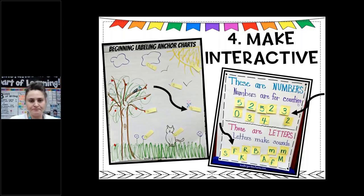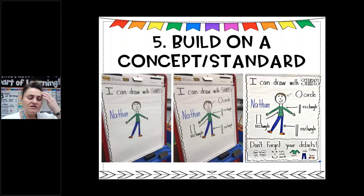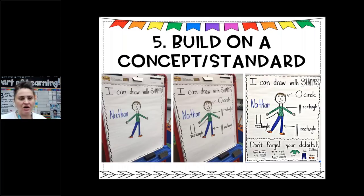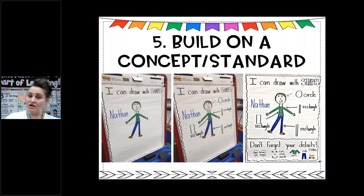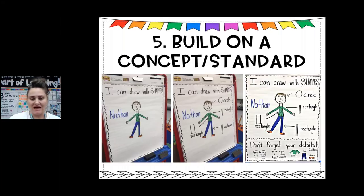Not every anchor chart is built in one day — it's a process we're building on. This one was 'drawing with shapes' at the beginning of kindergarten. I modeled making a person using shapes, then labeled it — rectangles for legs, a circle for the head. At the bottom: 'don't forget your details.' This anchor chart stays hanging in the writing station so when they go there, they can always refer back to it: 'I know how to draw a person because remember when we built a person using shapes?'